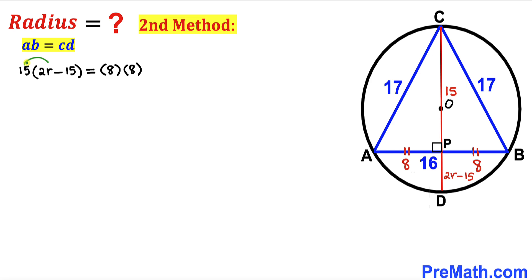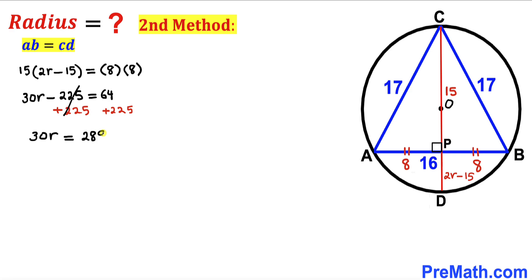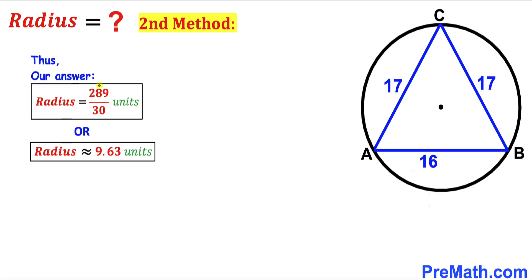Distributing: 30r − 225 = 64. Adding 225 to both sides: 30r = 289. Dividing by 30: r = 289/30 units. The radius of the circle is 289/30 units by the second method as well, approximately 9.63 units. That's our final answer.